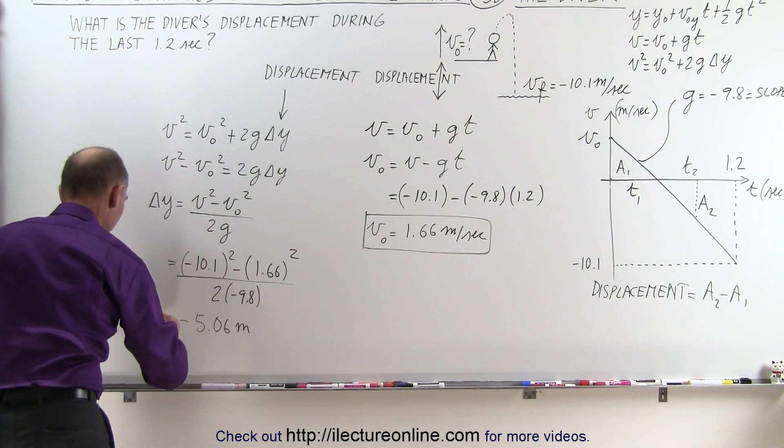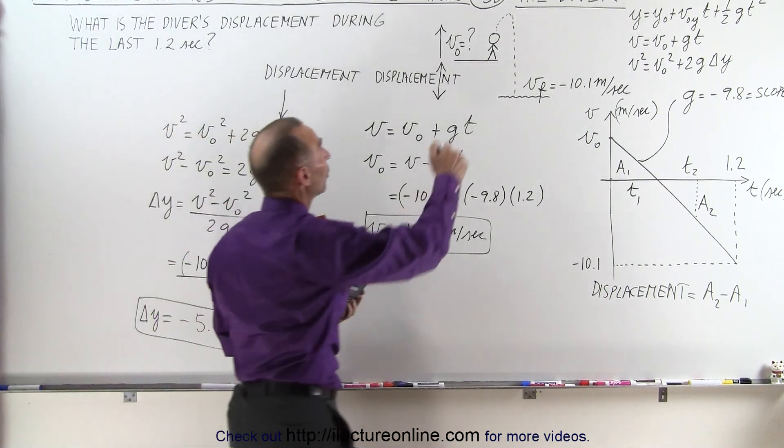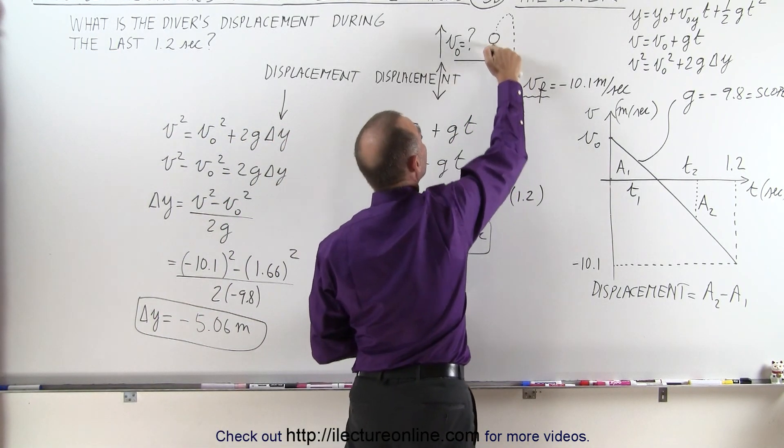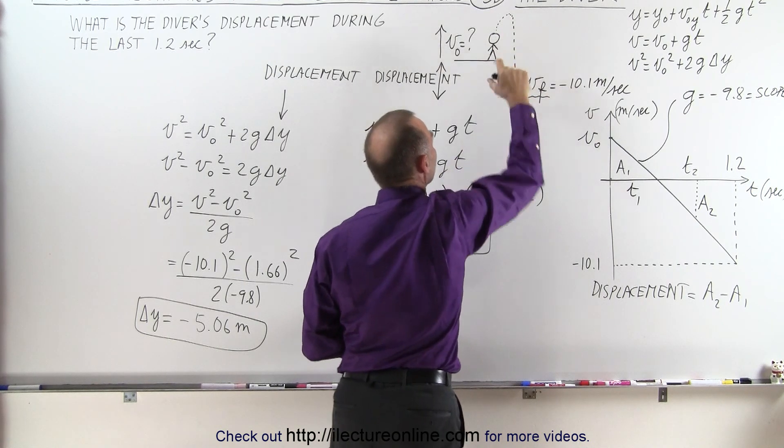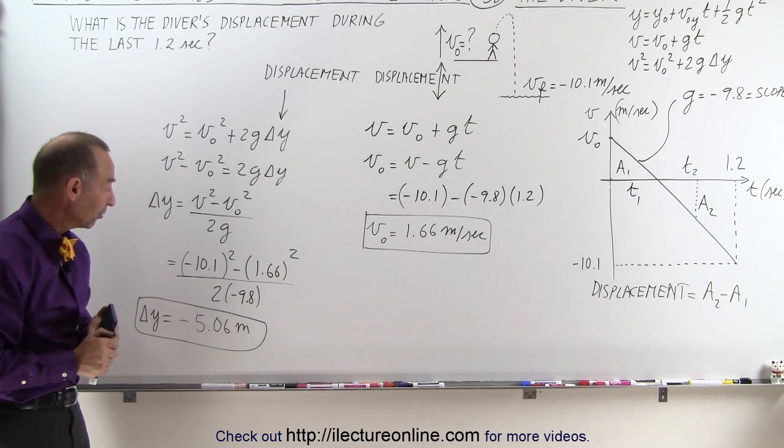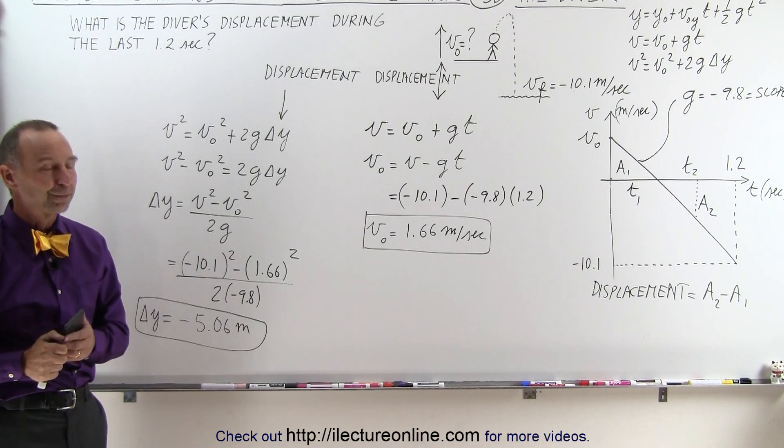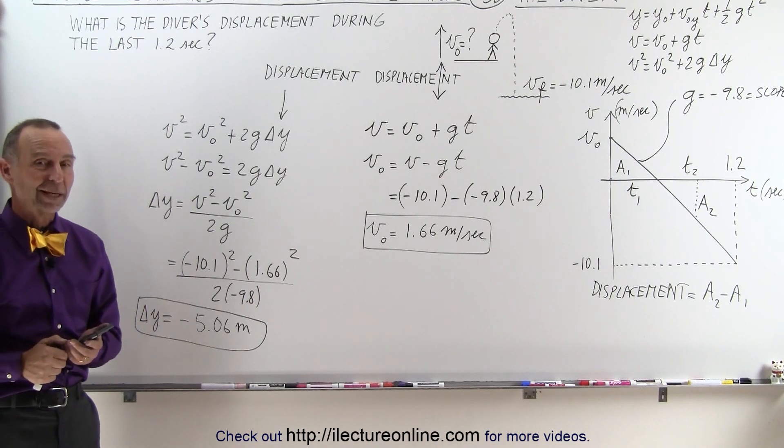So my delta y does tell me that from the starting point to the end point, ignoring these distances because they will cancel out in terms of displacement, we only calculated this distance right there, and that's the correct value for the final displacement of that particular diver. And that's how it's done, using the equations of kinematics.